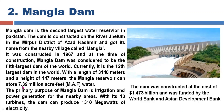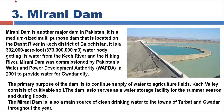The Mangla reservoir can store 7.39 million acre feet of water. The primary purpose of Mangla Dam is irrigation and power generation for nearby areas. With its 10 turbines, the dam can produce 1,310 megawatts of electricity. The dam was constructed at a cost of 14,473 million dollars and was funded by the World Bank and the Asian Development Bank.